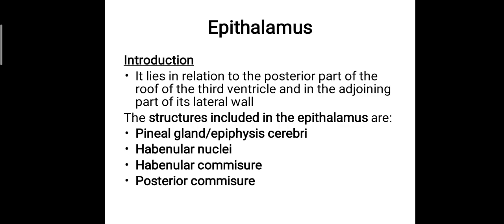This concludes the metathalamus. The epithalamus lies in relation to the posterior part of the roof of the third ventricle. The term third ventricle will be explained shortly when we cover the ventricular system of the brain, which includes spaces that store and circulate cerebrospinal fluid around the brain. So just understand that the epithalamus is in relation to the posterior part of the roof of the third ventricle and the adjoining part of its lateral wall.